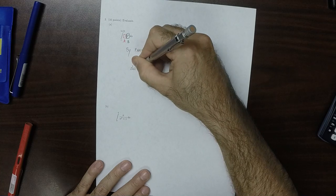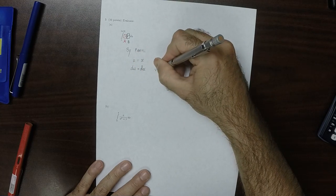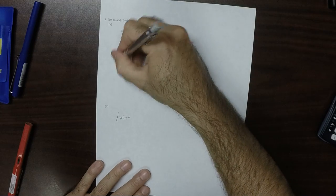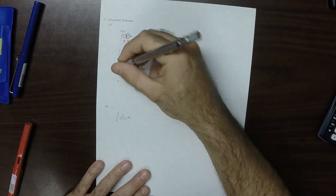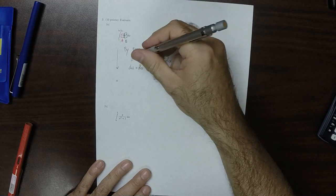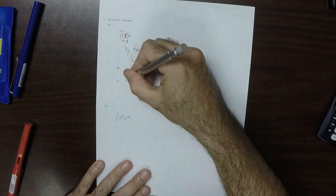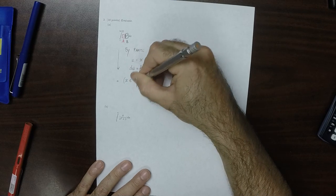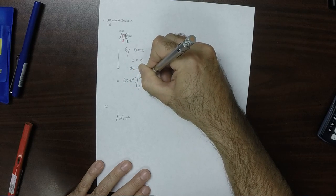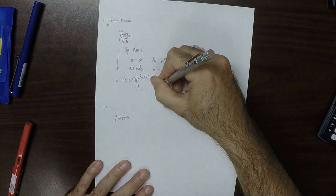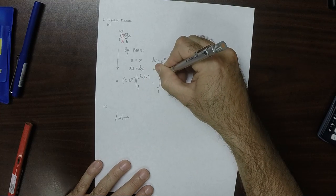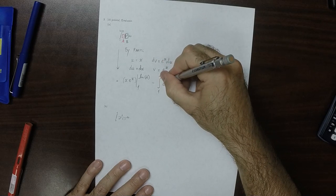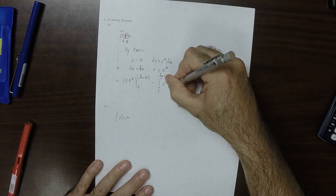Therefore du is dx and v is e to the x. And as a result of that, this is uv, so x times e to the x, and then this evaluated from 1 to log 2, minus the integral from 1 to log 2 of v du, well that's e to the x dx.